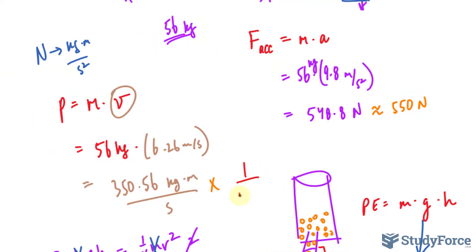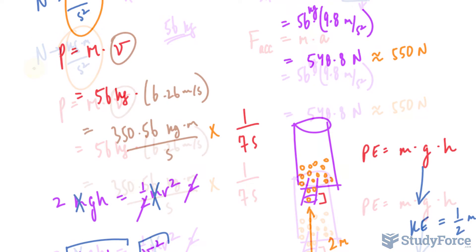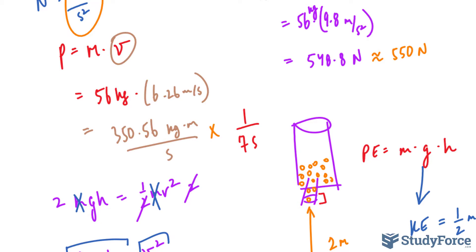So 1 over 7 seconds will give us a value whose units are that of newtons. Now this could also be achieved by simply dividing by 7 seconds.